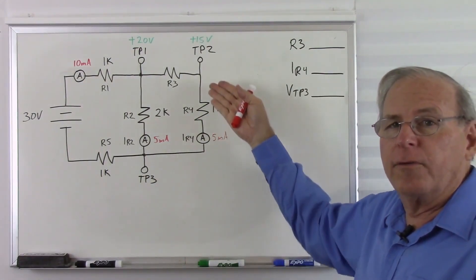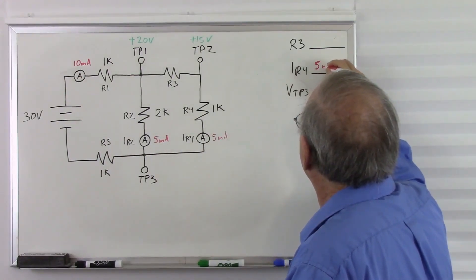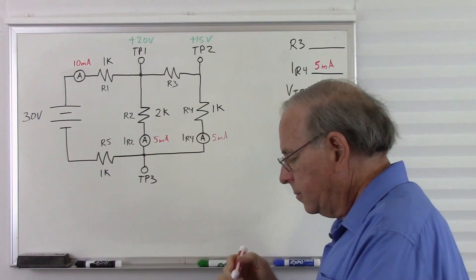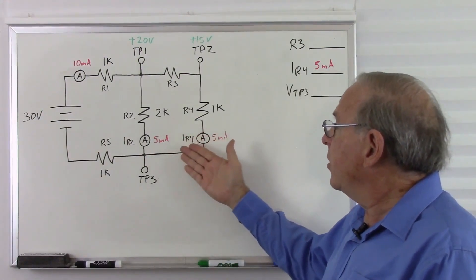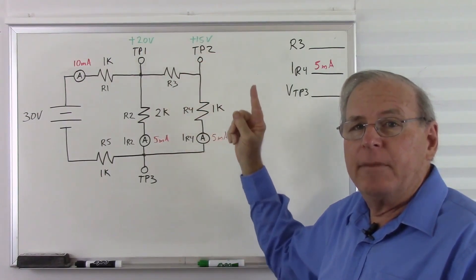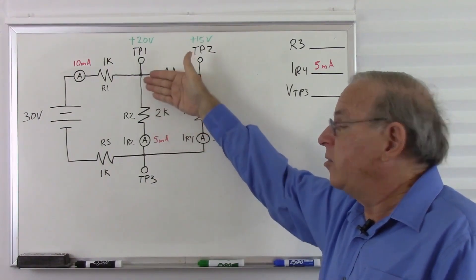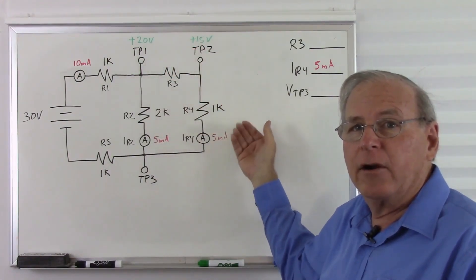That's our current through R3 and R4. And now, we can see that since these two legs have equal current, they must also have equal resistance. So if we have 2k here, we must also have 2k here.